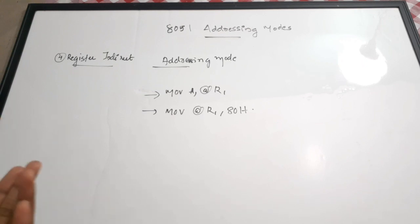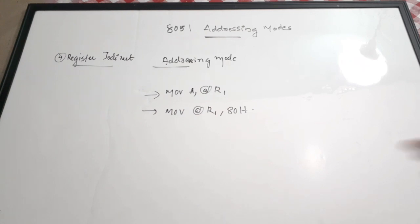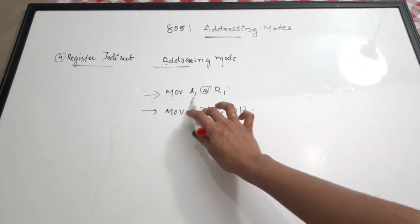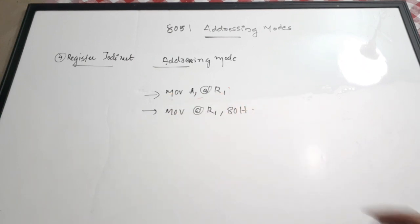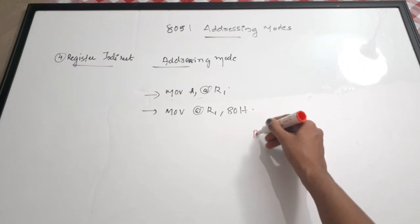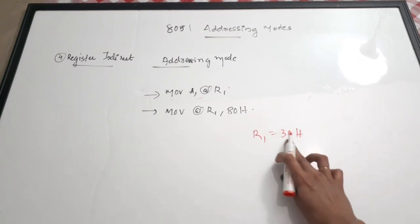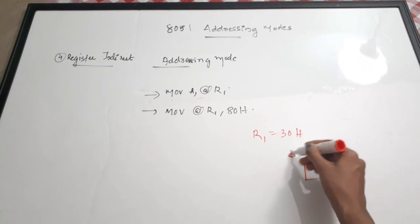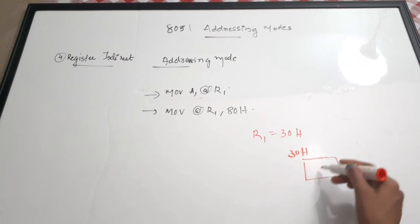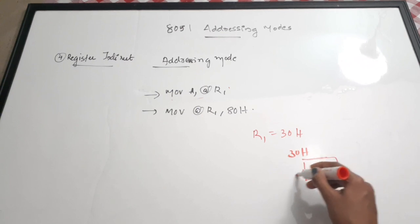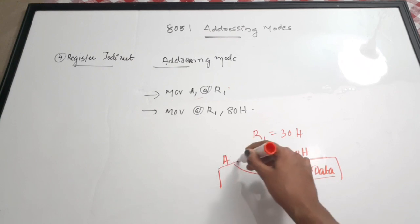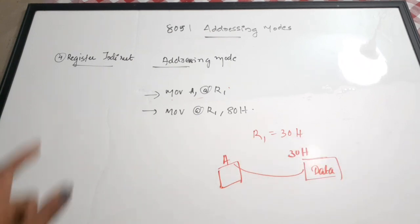The fourth addressing mode is register indirect addressing mode. It is somewhat connected to direct addressing mode. In direct addressing mode we directly give the address location, but here the address location is stored in a register which is specified in the instruction. For example, MOV A, @R1 — consider that the value present in R1 is equal to 30h, so 30h is the address location from where we take the data and pass it to the accumulator.